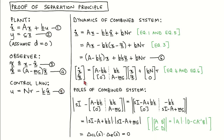With the inclusion of the observer, we have added the same number of states as in the plant, which means that the full system has double the number of plant states. We choose the states for the full system to be the plant states x and the estimation error x̃. The input to the full system is the reference input r. Our aim is to write the full system dynamics in terms of the chosen states and the input.